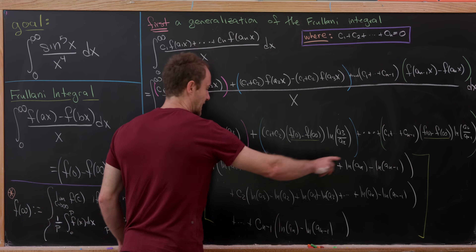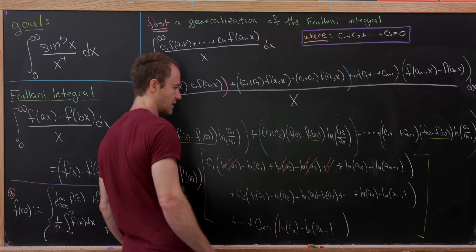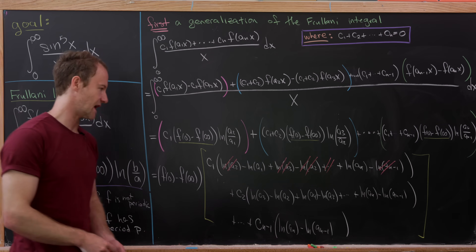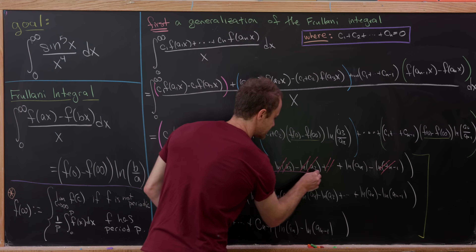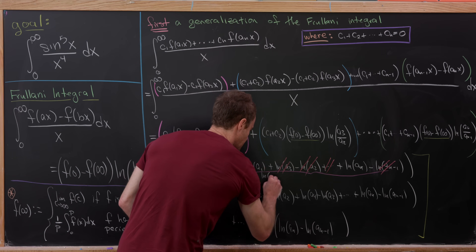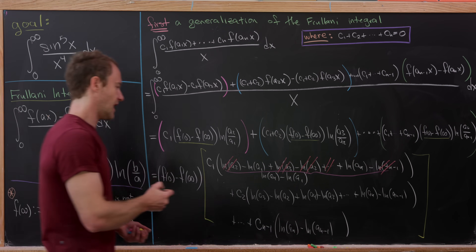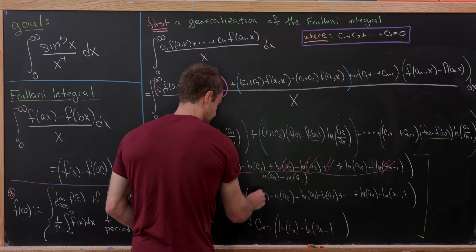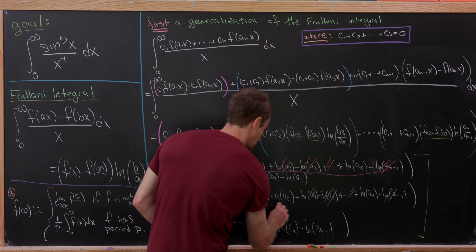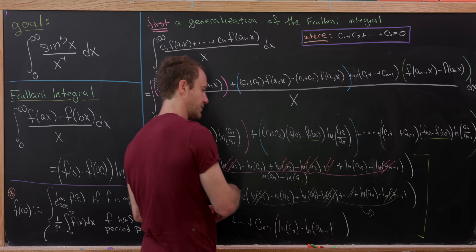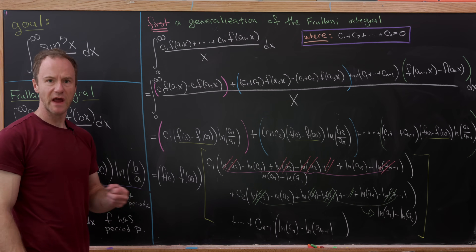There is a big telescoping collapse. For the c₁ group: ln(a₂) cancels, ln(a₃) cancels down the line, and ln(a_{n−1}) cancels, leaving ln(aₙ) − ln(a₁). For the c₂ group: similarly, everything collapses to ln(aₙ) − ln(a₂). So cₖ is attached to ln(aₙ) − ln(aₖ) for each k.